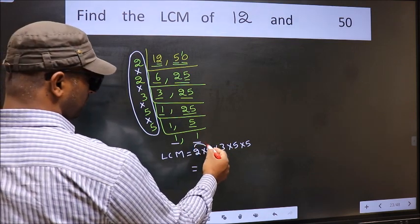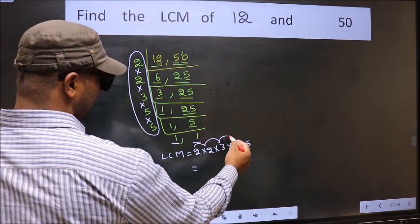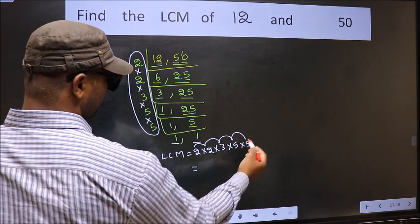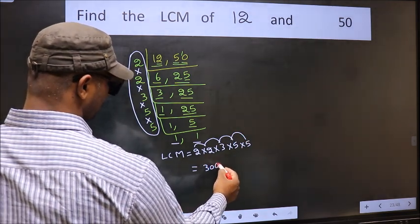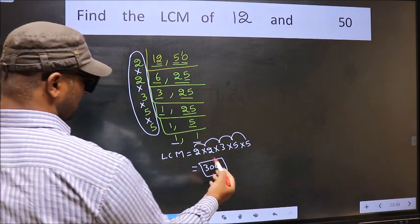2 into 2, 4 into 3, 12 into 5, 60 into 5, 300 is our LCM.